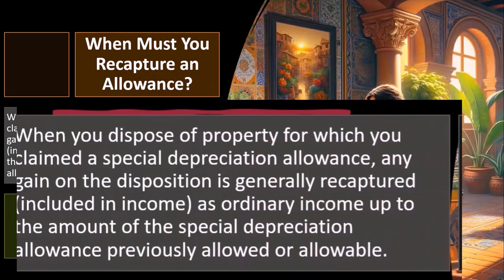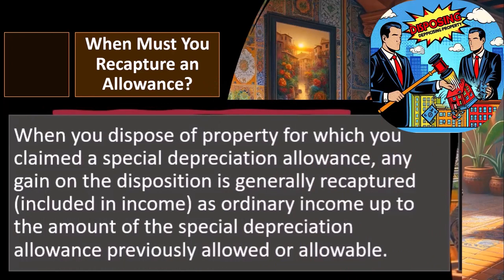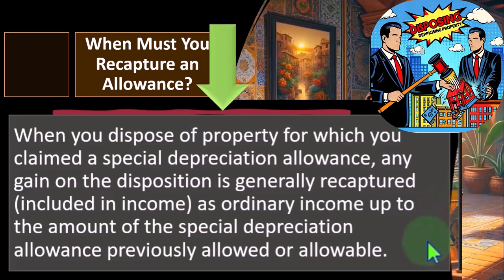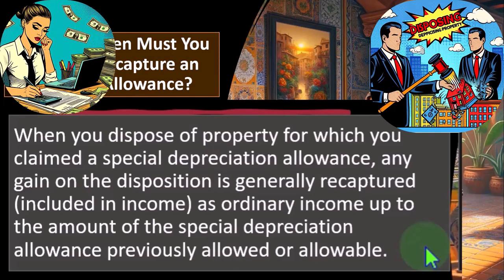So when you dispose of property for which you claimed a special depreciation allowance, any gain on the disposition is generally recaptured — included in income as ordinary income up to the amount of the special depreciation allowance previously allowed or allowable. Obviously, software can greatly help us with this, but we want to be able to understand the concept so we know what's going on, so we can check that the software is doing what we would think it would do, and so that we can explain what is happening to clients and properly plan for what taxation will take place if we sell property.